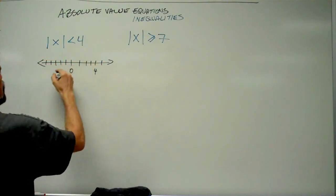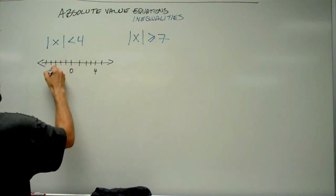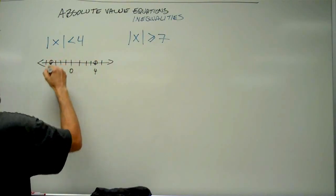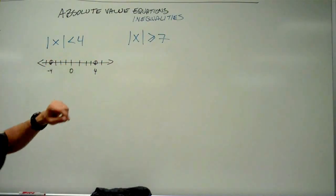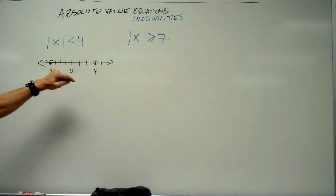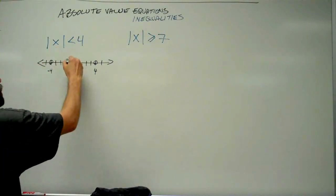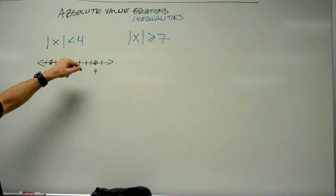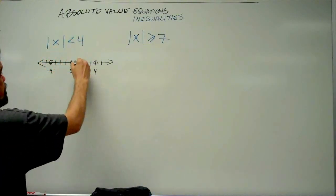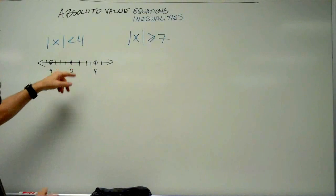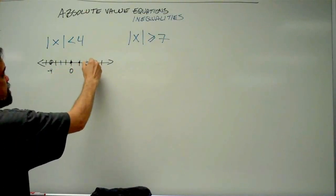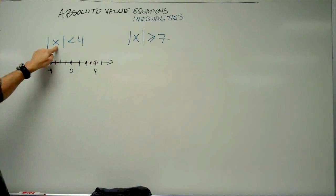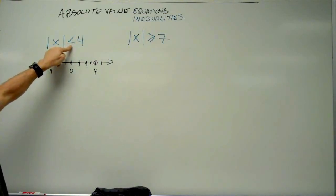Here's 4 and here's negative 4. The absolute value of 0 is 0, that's less than 4, so that's going to be included. The absolute value of 1 is 1, that's less than 4, so that's included. 2 is also in there, 3 is also in there, 4 is not — because the absolute value is 4, and 4 is not less than itself.